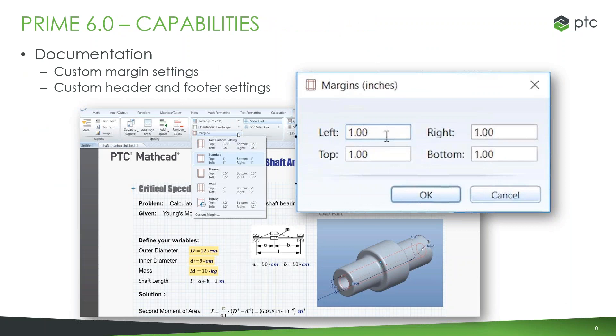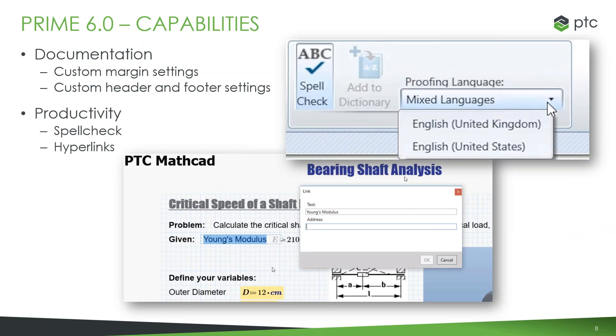In the context of moving forward with MathCAD Prime 6.0, there are enhancements around documentation. So you have more abilities for documentation. We've done this by giving users the ability to create their own custom margin settings for whatever purpose. Includes full control over header and footer options. Productivity was another area of focus and the ability to spell check has been improved, including the ability to change the proofing language to whatever language you're using at the time. And we also now have the ability to provide hyperlinks in our calculations and documents.